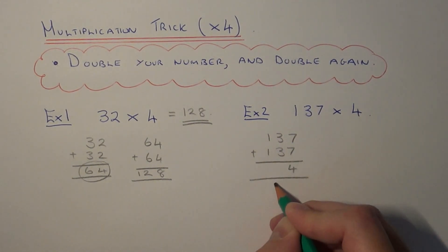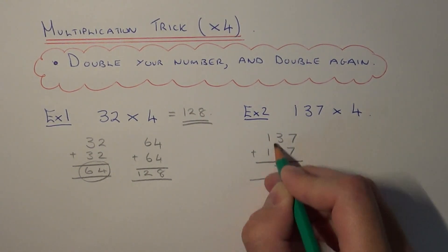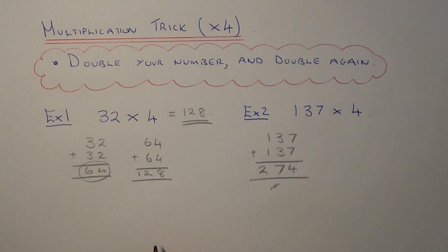So 7 add 7 is 14, 3 add 3 is 6 plus the 1 underneath is 7, 1 add 1 is 2. So we get 274. Now we just need to double this number here.